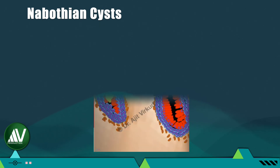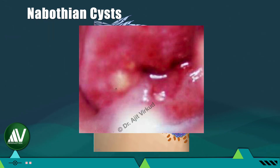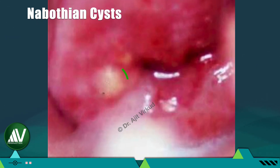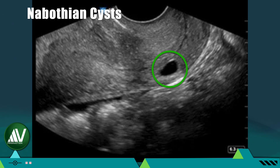During squamous metaplasia, in some areas the newly formed squamous cells cover the functional columnar cells that produce mucus. This causes the underlying cervical crypts of columnar epithelium — the so-called cervical glands — to be blocked. They continue to produce mucus, but these secretions accumulate in situ as they have no drainage. This accumulation is called a Nabothian cyst. Clinically it looks like a white or yellowish round raised area on the transformation zone. With modern ultrasound technology, Nabothian cysts can be observed on transvaginal sonography as a round anechoic area surrounding the endocervical canal.